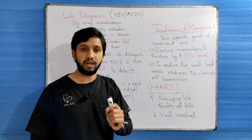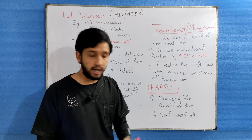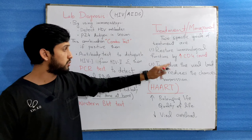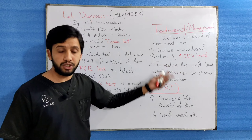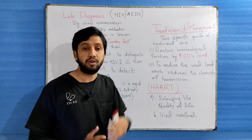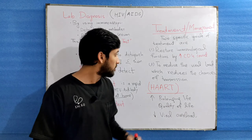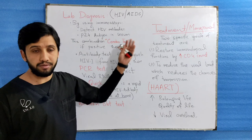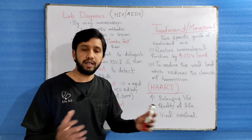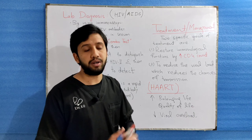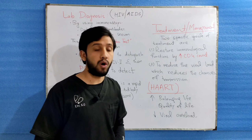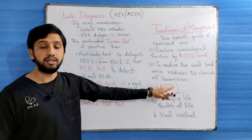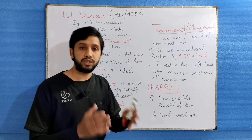Moving on to treatment and management — there are two specific goals. Number one is to restore immunological function, that is, to increase CD4 count, which we can achieve by using antiretroviral therapies. The second goal is to reduce the viral load, which also reduces the transmission of the virus from one person to another.